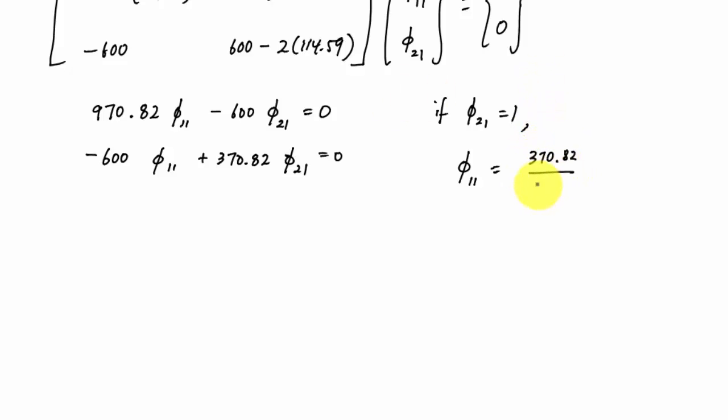This is just going to be 370.82 over 600 times one, which equals 0.618. The negatives just from algebra, if I take this to the other side it becomes positive, no big deal. So this is my first mode shape. Here phi one would be on the first floor 0.618, and on the top floor it equals one.